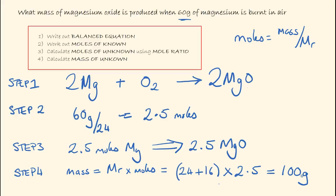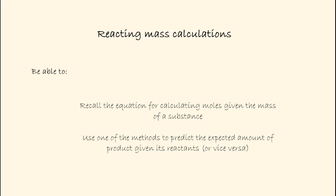If you're in my class or are my tutees, do try to use method 2 because it's my preferred method and it makes the calculations we encounter later with titrations and volumes much easier. In recap: you should be able to recall the equation for calculating moles given the mass of a substance, and use one of the methods to predict the expected amount of product given its reactants or vice versa. That's all for now — we'll have lots more examples in future, bye for now.